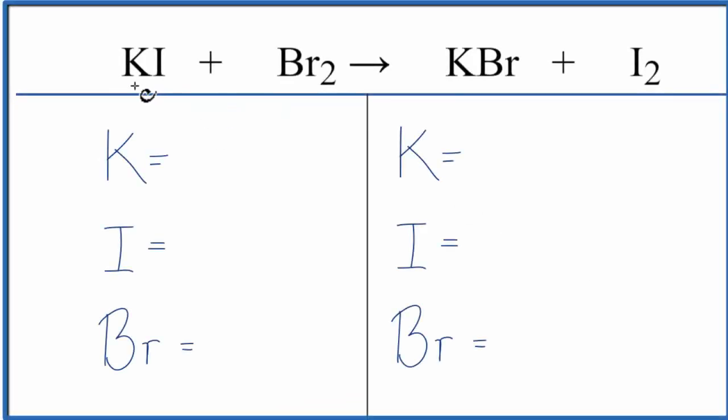In this video, we'll balance equation KI plus Br2. That's potassium iodide plus bromine gas.